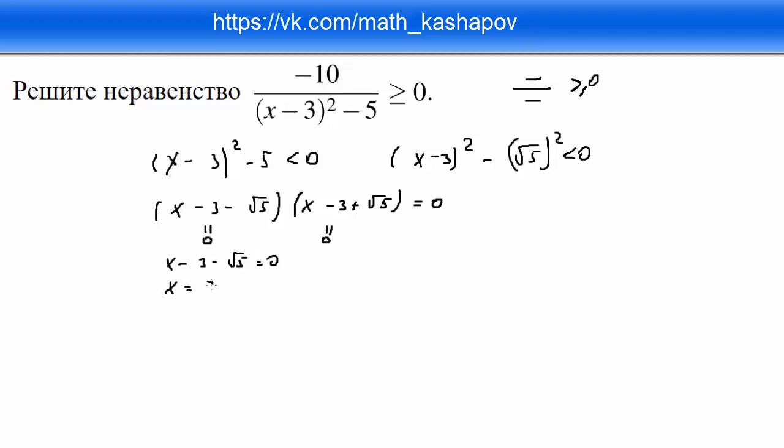И из второй скобки получается x минус 3 плюс корень из 5 равно 0. Отсюда x равно 3 минус корень из 5.